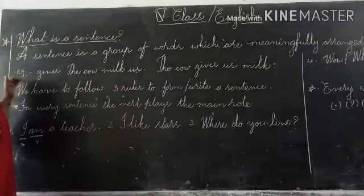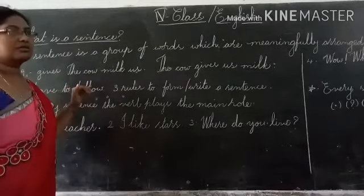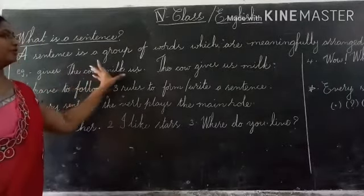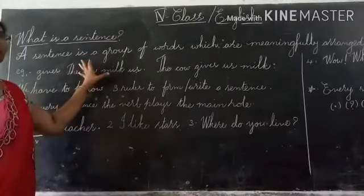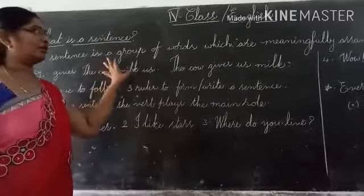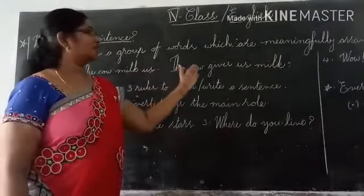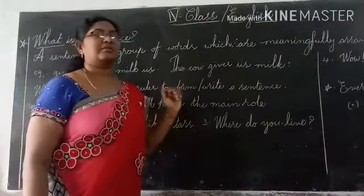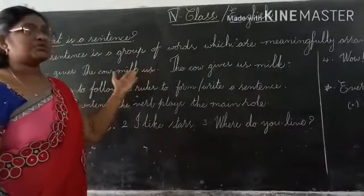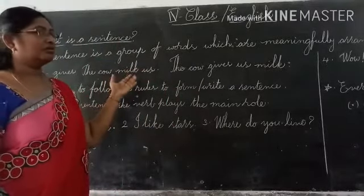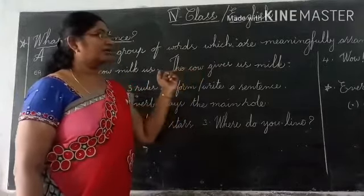Here I give some examples. See: 'gives the cow milk us.' Here some group of words I have given. Are they arranged meaningfully? No, they are not arranged meaningfully. Now see, I corrected the sentence: 'The cow gives us milk.' In the two sentences, which one is meaningful? The second one. Very good. 'The cow gives us milk.'